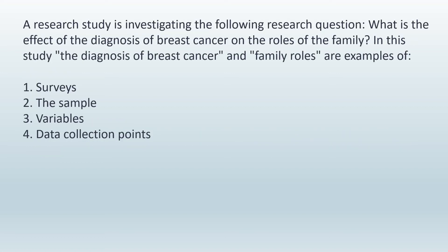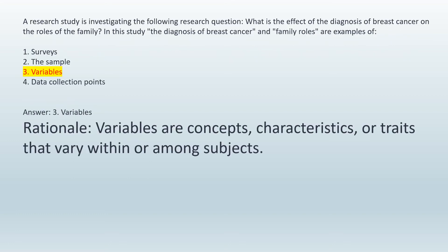A research study is investigating the following research question: What is the effect of the diagnosis of breast cancer on the roles of the family? In this study, the diagnosis of breast cancer and family roles are examples of: 1. Surveys. 2. The sample. 3. Variables. 4. Data collection points. Answer: 3. Variables. Rationale: Variables are concepts, characteristics, or traits that vary within or among subjects.